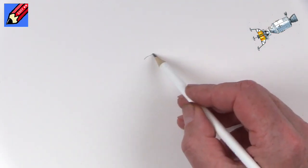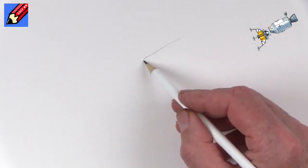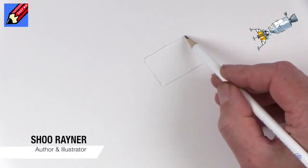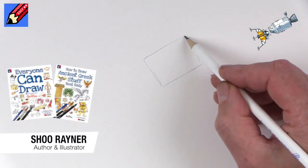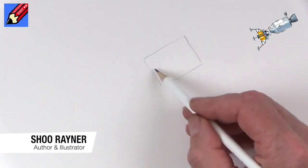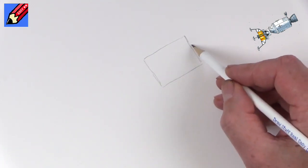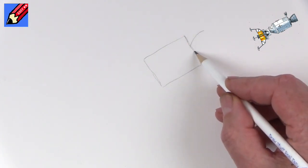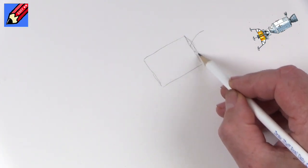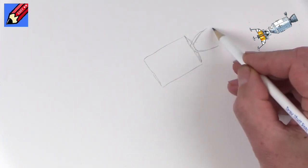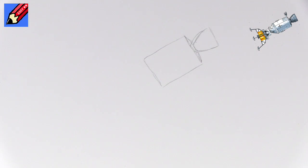Now don't press too hard because you're going to want to erase this later. The first thing we're going to do is draw the service module, which is the big chunky bit on the back. This just looks like a rectangle from the side, and then we want a little bit of a dome there as well. And then we want the engine, the rocket motor, sticking out like that.